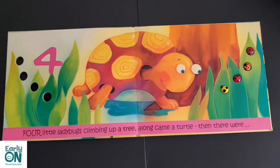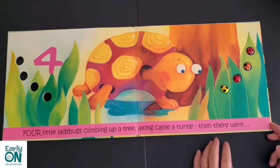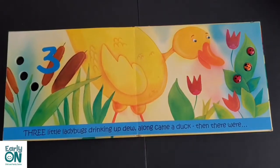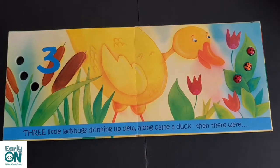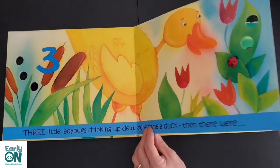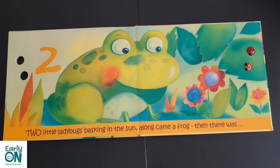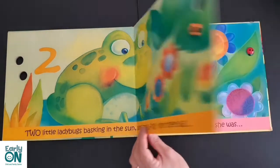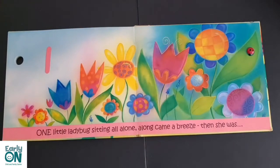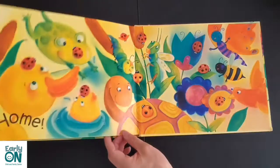Four little ladybugs climbing up a tree. Along came a turtle, then there were three. Three little ladybugs drinking up dew. Along came a duck, then there were two. Two little ladybugs basking in the sun. Along came a frog, then there was one. One little ladybug sitting all alone. Along came a breeze, then she was home.